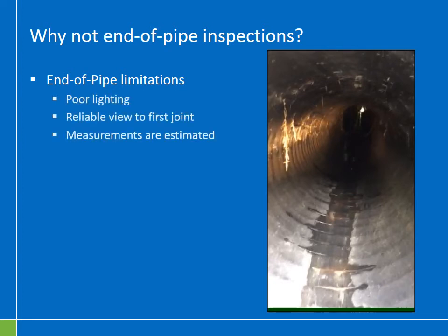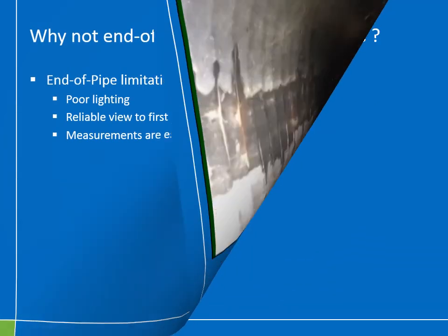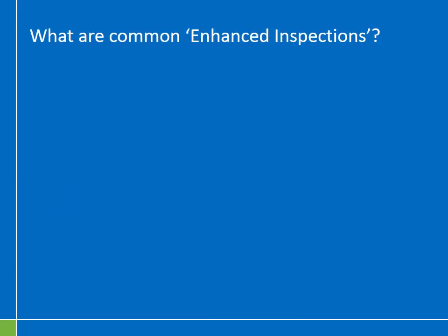So I can get a good view for the first 30 to 40 feet of the pipe, but there are limitations. There's poor lighting because the flashlight only travels so far. I can view up to about the first joint, and any measurements I'm going to take are really only estimates since I'm located on the outside of the pipe. To fully document the condition of a culvert, one needs to use some sort of enhanced inspection technology.